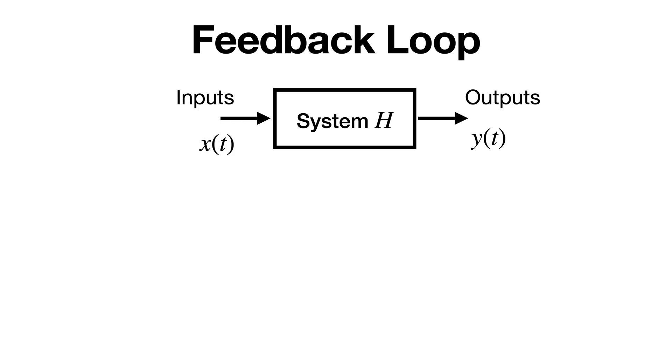When one of the outputs of a system is also one of its inputs, we have what's called a feedback loop where the output is fed back into the system as an input. This usually means the system also depends on its own state or the output from a previous time.